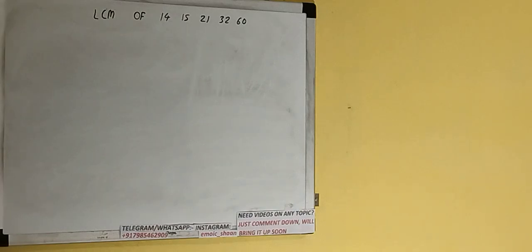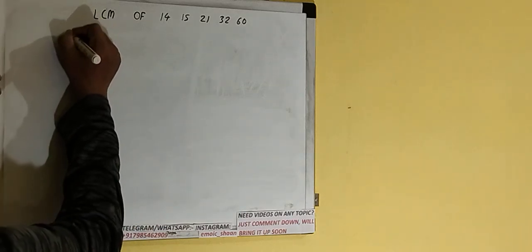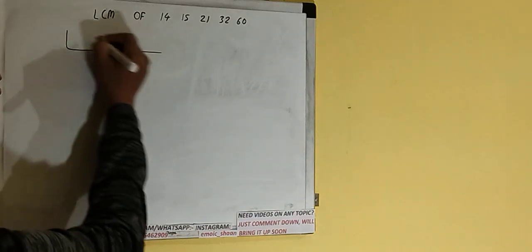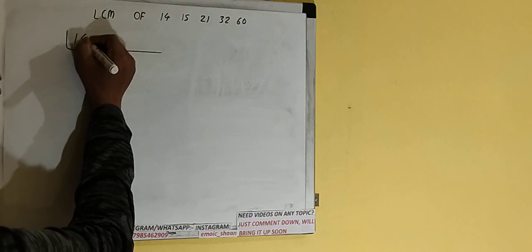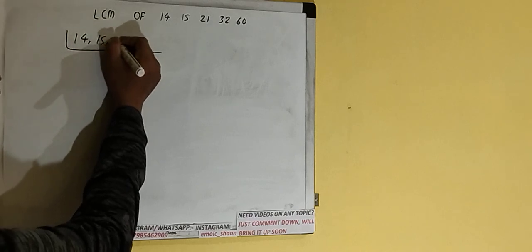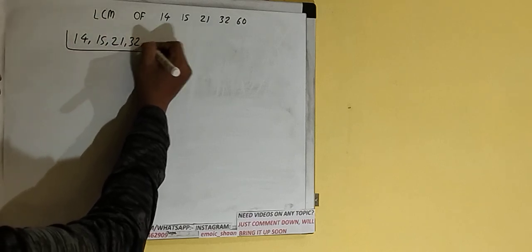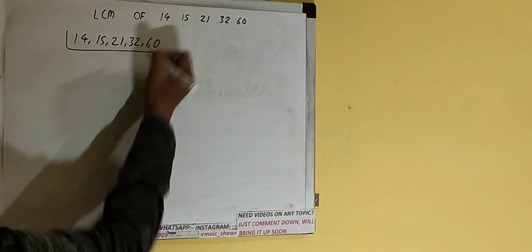Hello friends, in this video I'll be helping you with the LCM of the numbers 14, 15, 21, 32, and 60. So let's start. First of all, we need to write down all the numbers like this: 14, 15, 21, 32, 60.